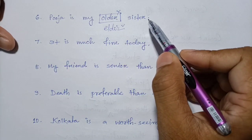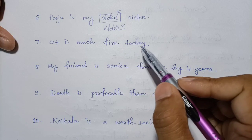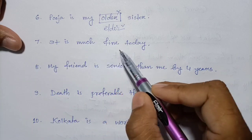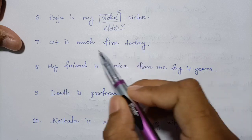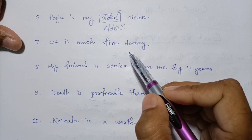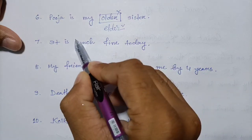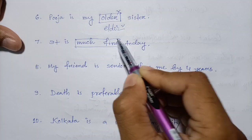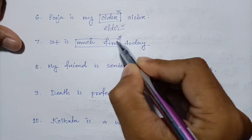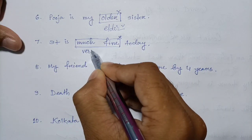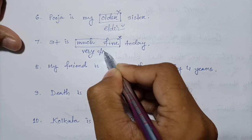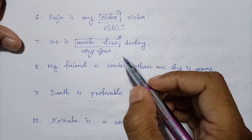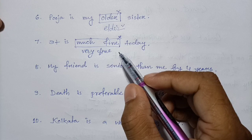Question seven: 'It is much fine today.' This is a wrong sentence. 'Much' is not used with adjectives like 'fine.' The correct word is 'very' — 'It is very fine today.'